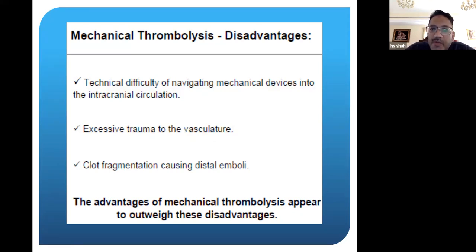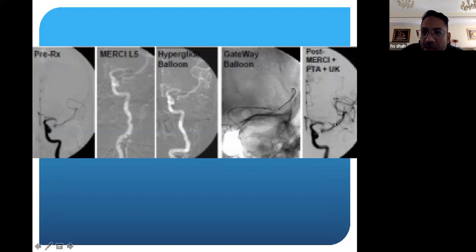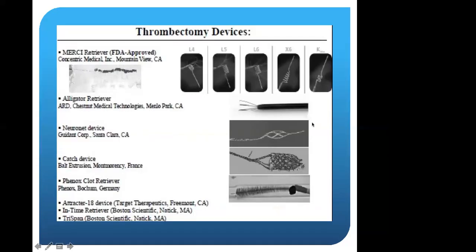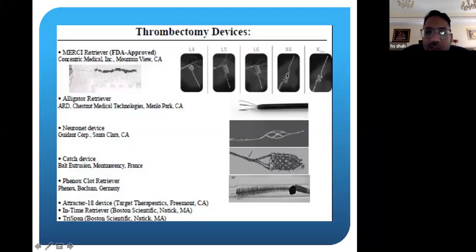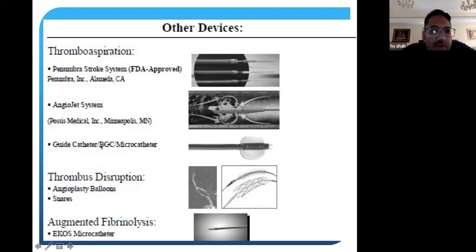Mechanical thrombolysis had advantages and disadvantages. The initial treatments tried included an emergency device, balloons, and combination balloons with different agents — for example, urokinase in a balloon. These were some of the earlier first-generation devices. There were also coil-like devices to engage the clot, alligator-type devices, different nets, and even brush-type devices. Second generation tried aspiration — specific aspiration-type devices to suck up the clot into a vacuum device. The Angiojet and Penumbra devices were used, along with different catheters for clot disruption using balloons or snares. Even augmented fibrinolysis using ultrasound was attempted.